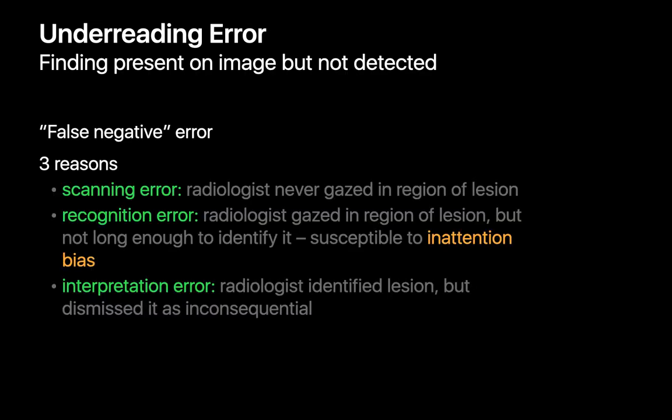Under-reading errors can occur in several ways. Sometimes it's a scanning error, when a radiologist's gaze never made it to the region of the image where a pertinent finding was. Sometimes it's a recognition error, when the radiologist did gaze at the region but not long enough to notice it. Sometimes it's an interpretation error, when the radiologist gazed long enough to see the finding, but then dismissed it as inconsequential.